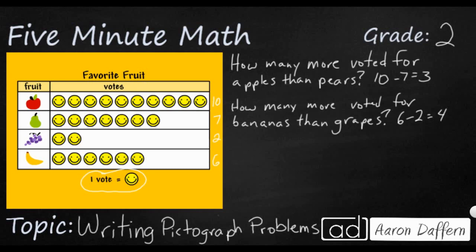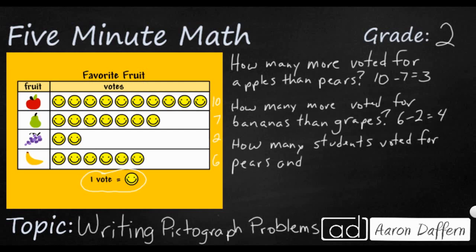We can also do some addition or summing problems. We might say how many students voted — I'm going to pretend these are students. How many students voted for pears and bananas? Instead of how many more, I'm not subtracting — I'm just adding pears and bananas together. Pears is seven and bananas is six, so add those two up and you're going to get 13.